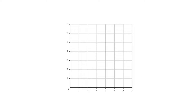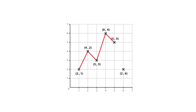Line graphs are drawn by first plotting data points on a Cartesian coordinate grid, then connecting a line between all of these points. Typically the y-axis has a quantitative value, while the x-axis is a time scale or a sequence of intervals.